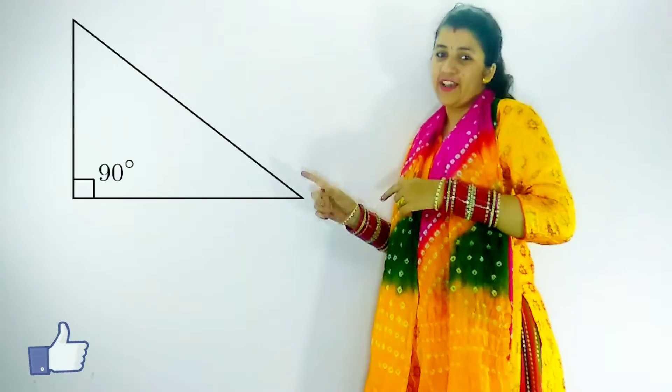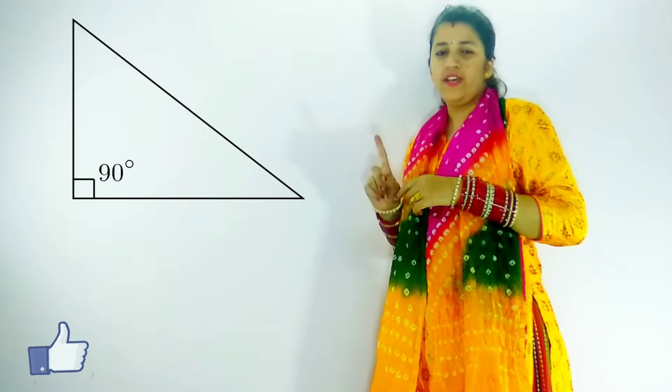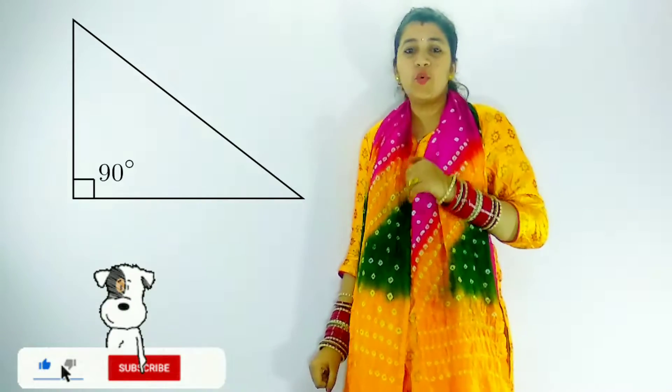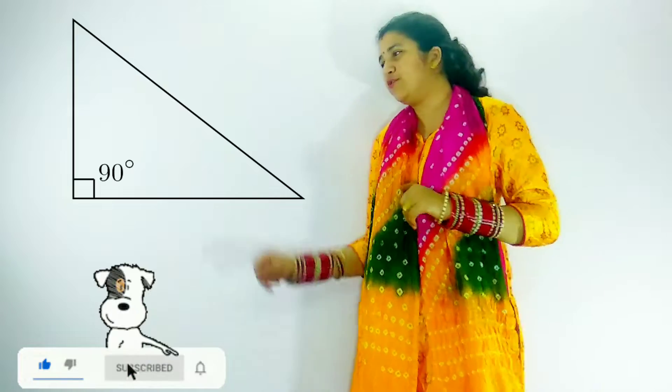A right triangle has one angle always equal to 90 degrees. So, the other two angles are always equal to 45 degrees.